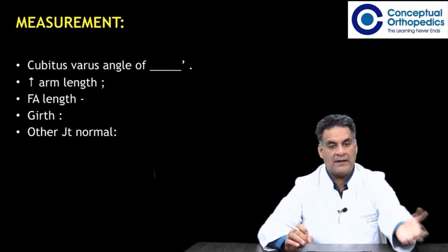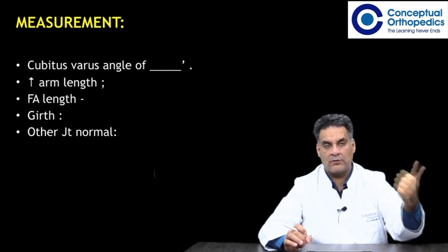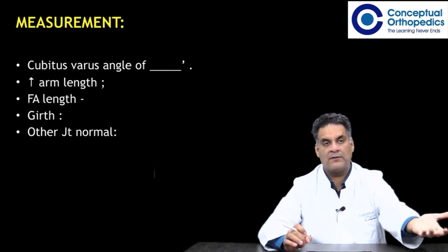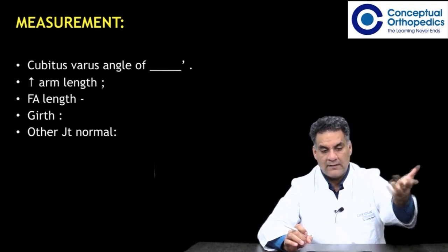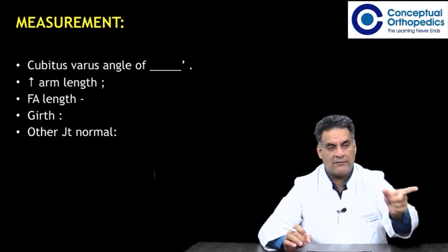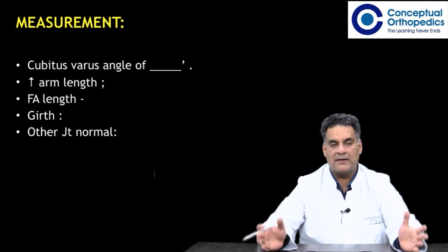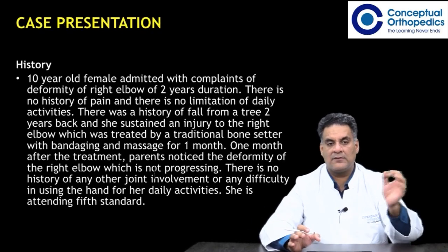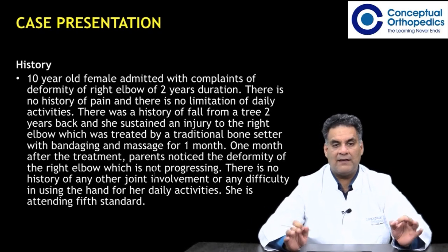Do talk about arm length, which is from the lateral part of the acromion to the midpoint of the line joining both epicondyles, and then from the center of that point to the center of the styloid process, which is the forearm length. Do talk about girth measurements bilaterally and talk about the other joints and limbs normally.